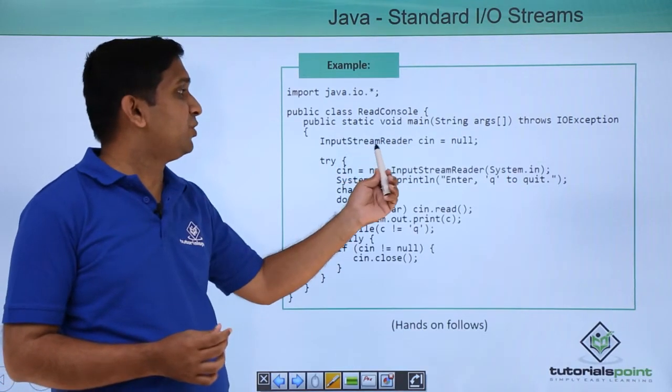We will implement this program in Eclipse. I have one class ReadConsole with a main method. InputStreamReader is the class I am using — I am creating an object of it and passing System.in, which is a static object. I am reading from the console character by character and printing it back to the console. Let me run the code — I type 'this is test' then press 'q' and the program terminates.